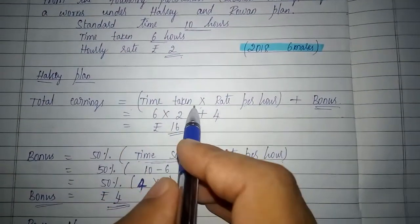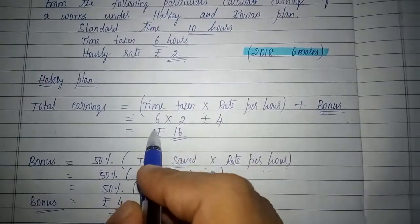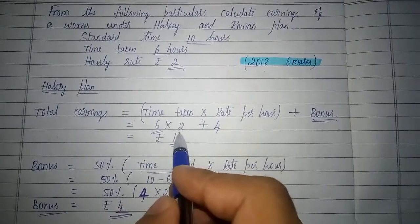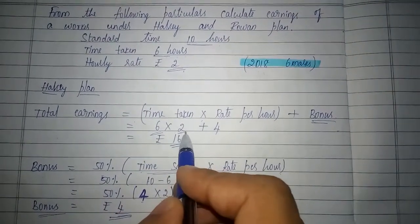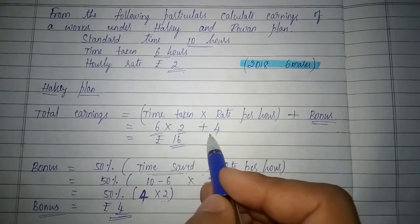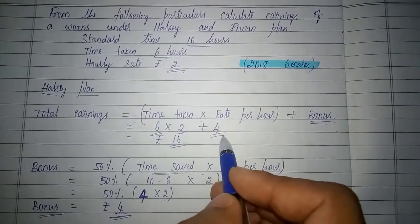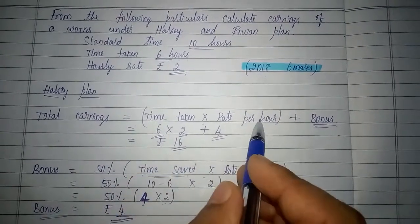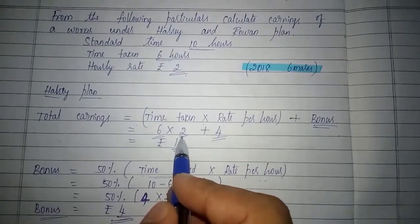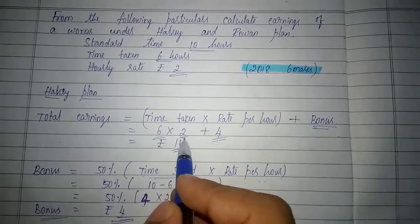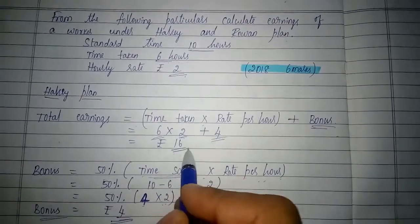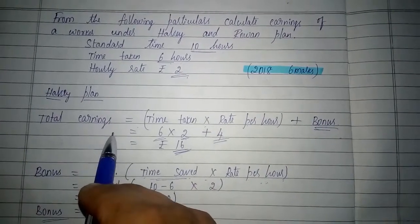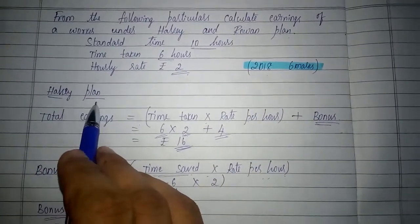Therefore, total earnings will be: time taken to complete the work is 6 hours, rate per hour is Rs. 2, and bonus is Rs. 4 as already calculated. So, 6 into 2 equals 12 rupees, and 12 plus 4 equals Rs. 16, which is the total earnings of the worker under the Halsey plan.